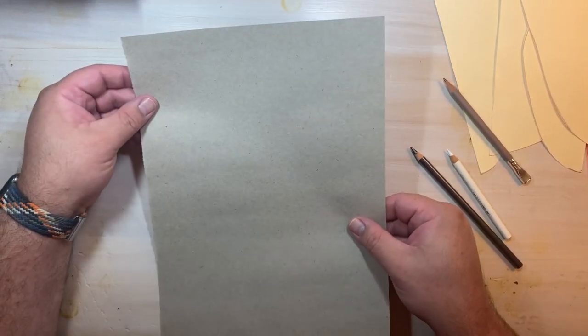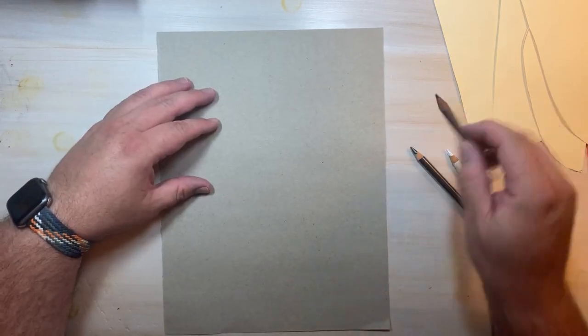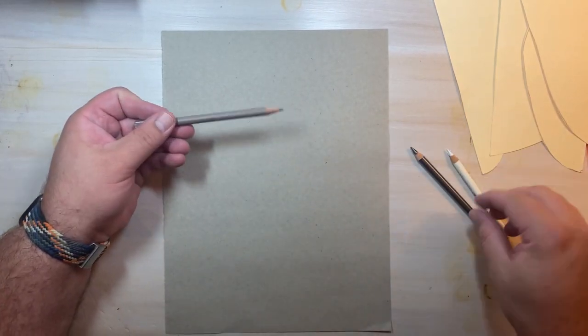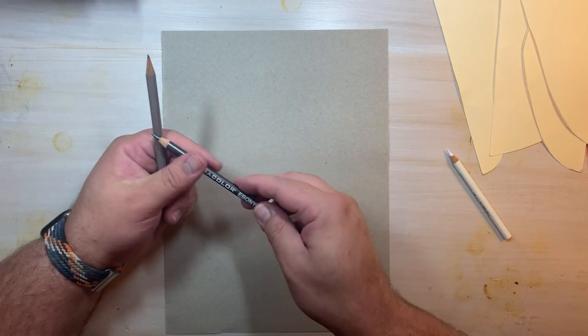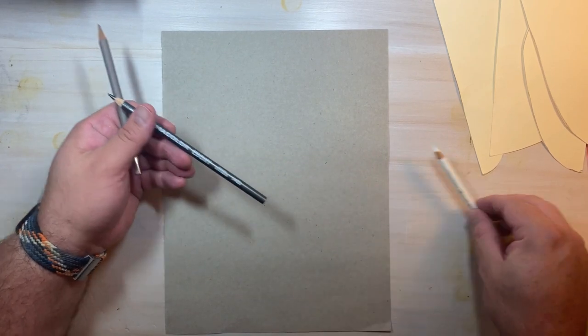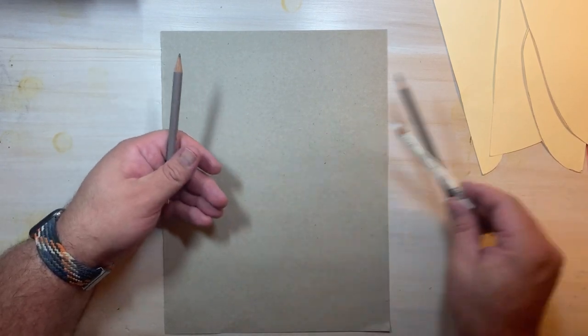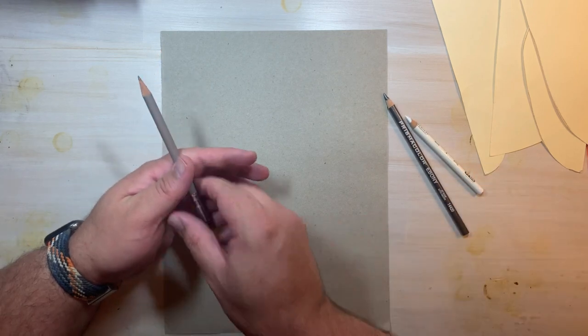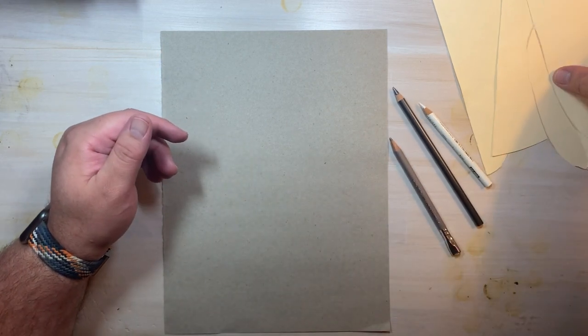We're going to use this gray paper as a mid-tone. We'll need a regular pencil for sketching out ideas, an ebony pencil for darker shading, and a white colored pencil, china marker, or white crayon for highlights.